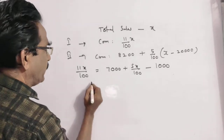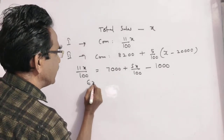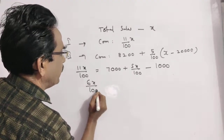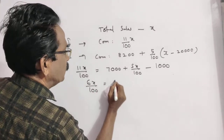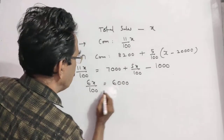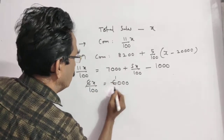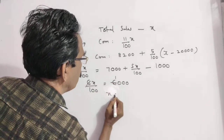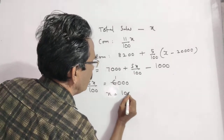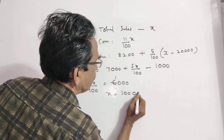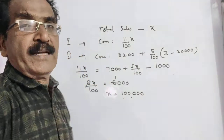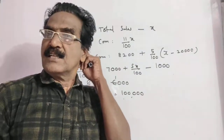6x/100 is equal to 6,000. So x is equal to 1,000 into 100, which gives 1,00,000. That is your answer, friends.